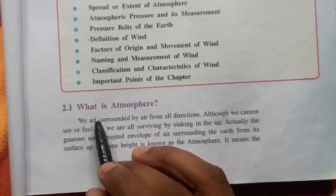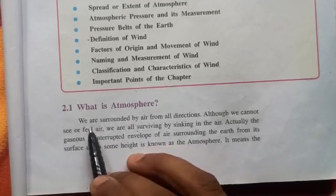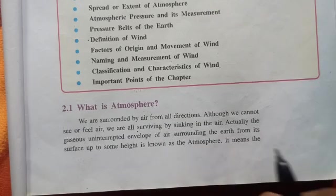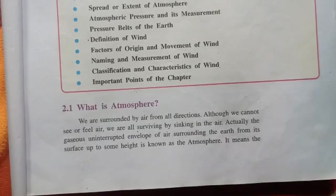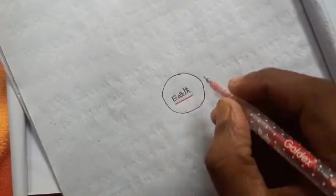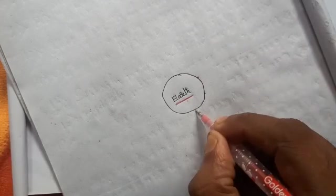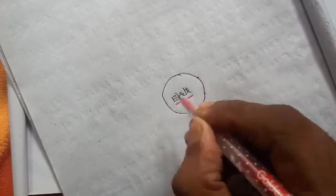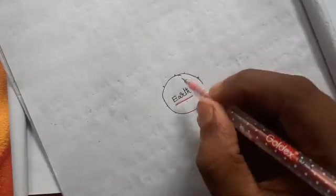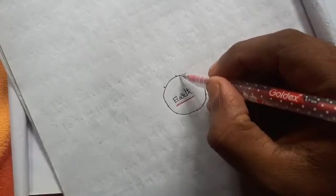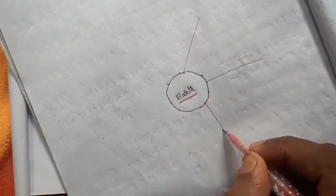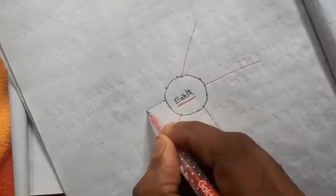Now see what is atmosphere. We are surrounded by air from all directions. Now I will explain with the help of a diagram. This is Earth and where we live, we live on the surface of Earth and we are surrounded by air. Atmosphere is there from the surface of the Earth to a certain distance.